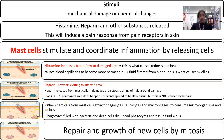Coming out of the widened blood vessels, macrophages — a type of phagocytic white blood cell — migrate towards the pathogens, engulf them, and destroy them via phagocytosis. As a result of phagocytosis, dead white blood cells form pus. After that you have repair and proliferation of the cut site through mitosis, and eventual healing.